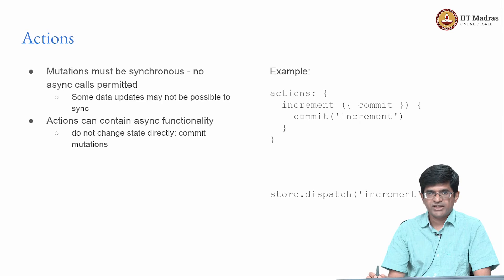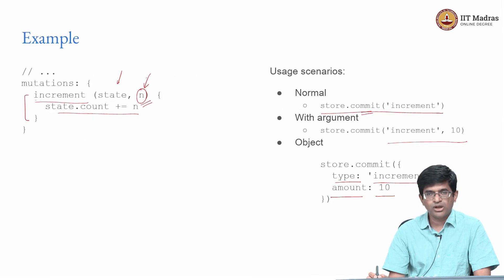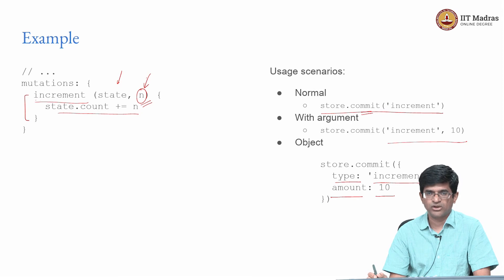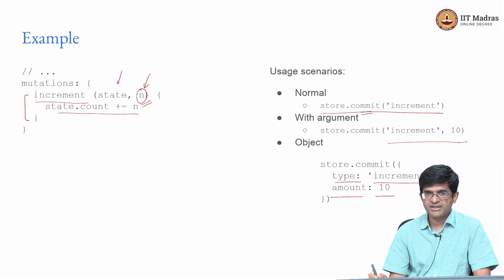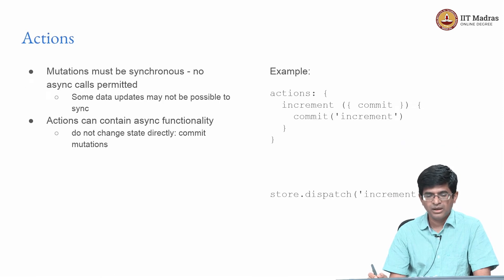Remember what was said about mutations being synchronous. Consider time travel debugging — you want to know the state of the system after each and every mutation. The problem with async operations is that they basically come back after some time — there is a callback, whether timer-based, fetch API-based, or something else, meaning you do not immediately have a result. In such a case, you cannot really record that as a mutation and then say you can time travel. So mutations put a restriction: if you are committing a mutation it has to be instantaneous, it has to be synchronous — something which is computed immediately and updated.